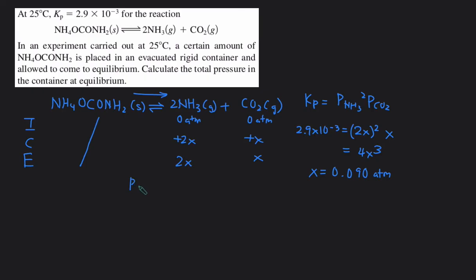Then we can plug x back into the E line. That means that the pressure of NH3 at equilibrium is going to be 2 times x, which will be 0.18 ATM. And then the pressure of CO2 will just be x, so 0.090 ATM. The total pressure is the sum of the partial pressure of all the gases. So we just add these together, and then we'll get the total pressure, and that will be 0.27 ATM.